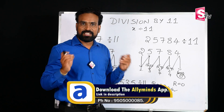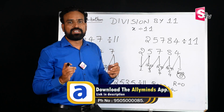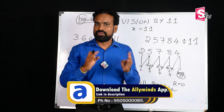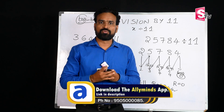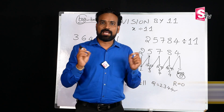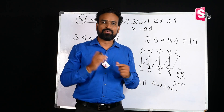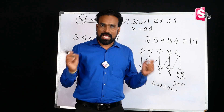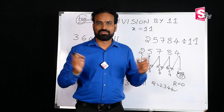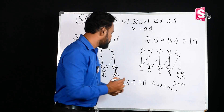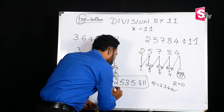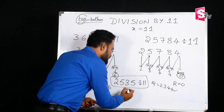If you want to know Vedic Mathematics with a calculation speed 10 to 15 times faster, check the AllieMinds app in the description. Subscribe and subscribe. Now, let's see: 2535 divided by 11.